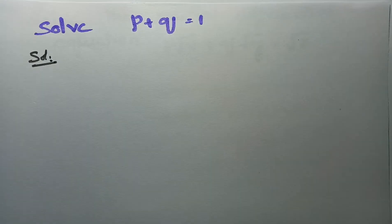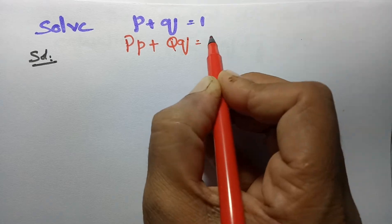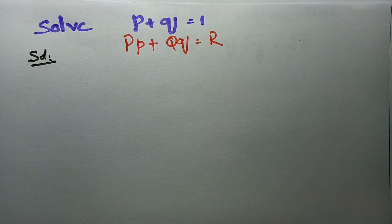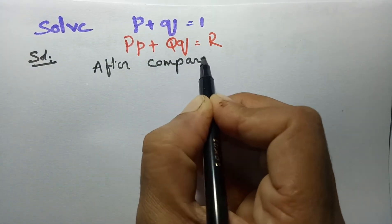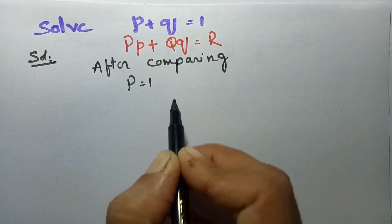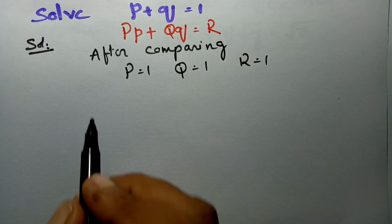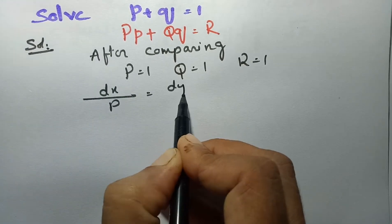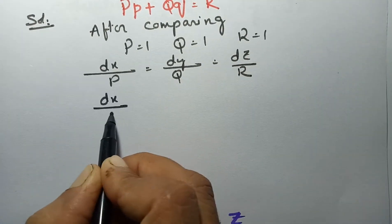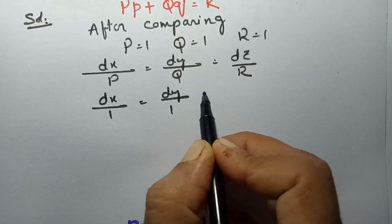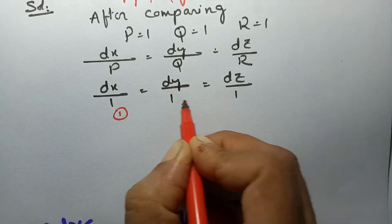This equation is of the form P·p + Q·q = R. Comparing, we identify capital P = 1, capital Q = 1, and capital R = 1. So we write the auxiliary equations as dx/1 = dy/1 = dz/1, giving us three equations labeled 1, 2, and 3.